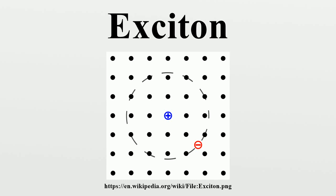Excitons may be treated in two limiting cases depending on the properties of the material in question. In materials with a small dielectric constant, the Coulomb interaction between an electron and a hole may be strong and the excitons thus tend to be small, of the same order as the size of the unit cell. Molecular excitons may even be entirely located on the same molecule, as in fullerenes. This Frenkel exciton, named after Yakov Frenkel, has a typical binding energy on the order of 0.1 to 1 electron volt. Frenkel excitons are typically found in alkali halide crystals and in organic molecular crystals composed of aromatic molecules such as anthracene and tetracene.